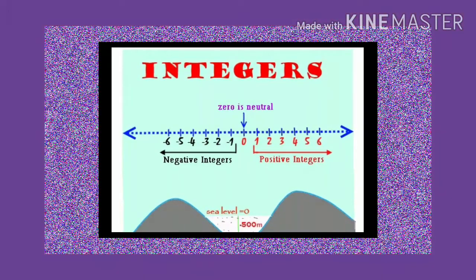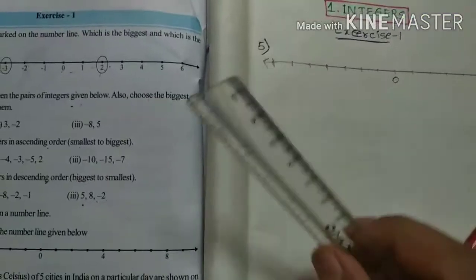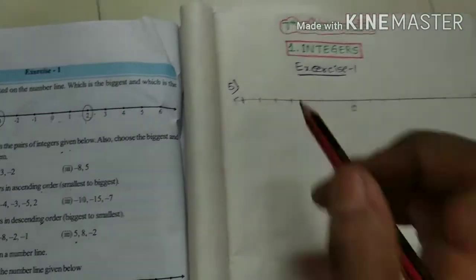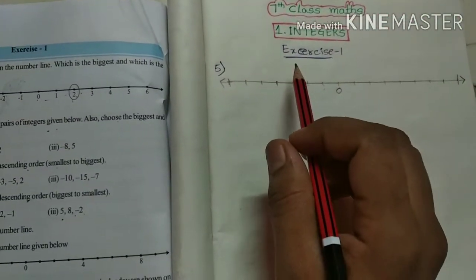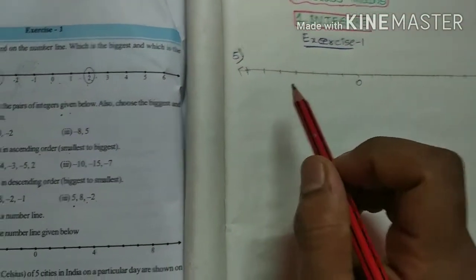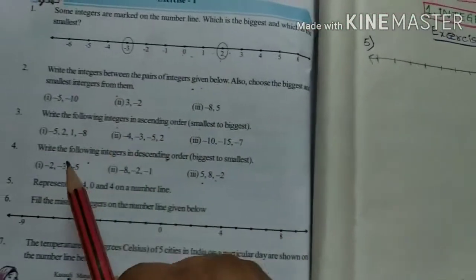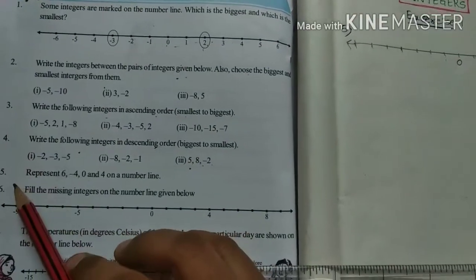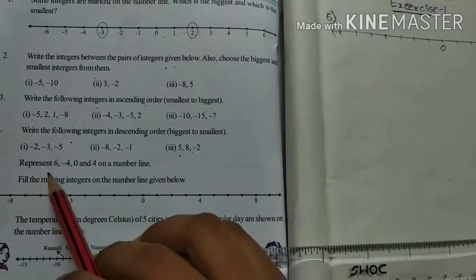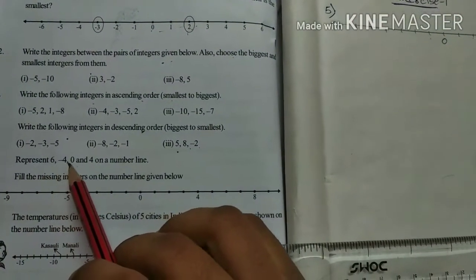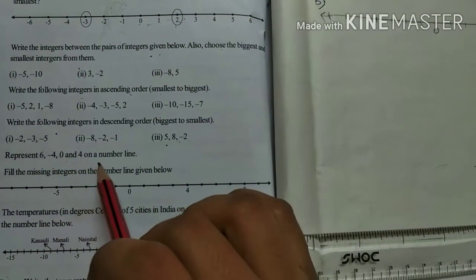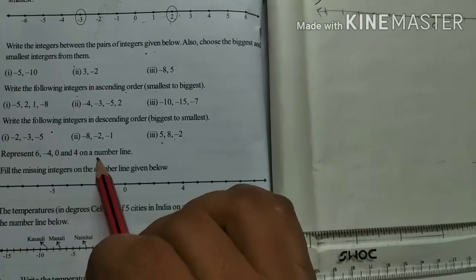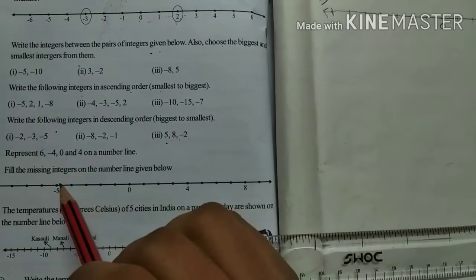If you want, before this problem, see my channel. Integers first exercise 1, 5th problem. So represent 6, minus 4, 0, and 4 on a number line.